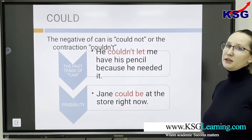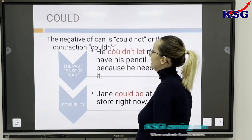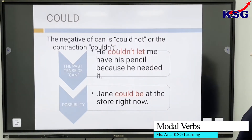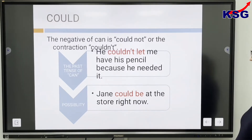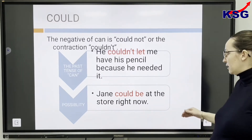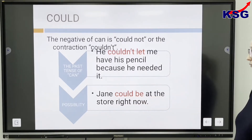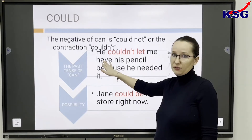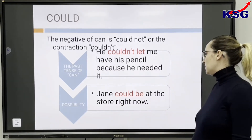Another modal verb is COULD. The negative of CAN is COULD NOT, or the contraction COULDN'T. He couldn't let me have his pencil because he needed it. Jane could be at the store right now. The first one is the past tense of CAN. The second one expresses possibility.